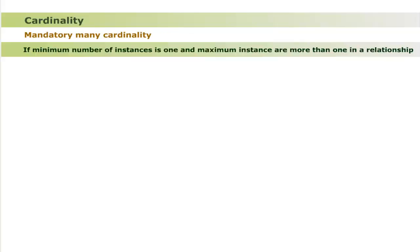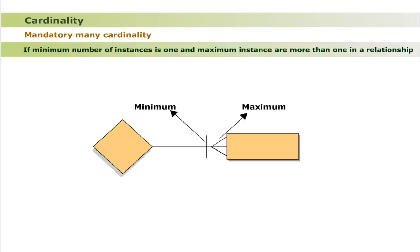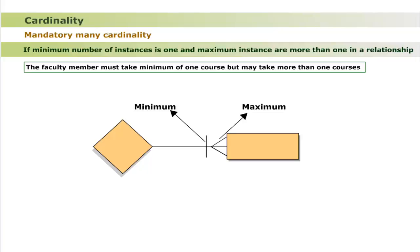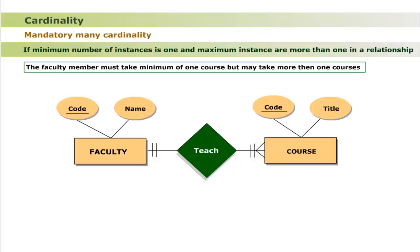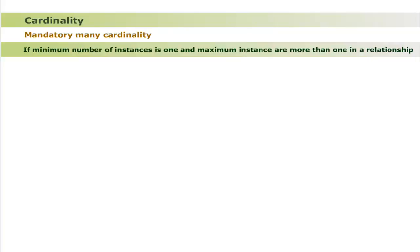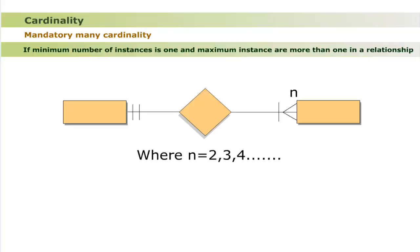Mandatory many cardinality means the minimum instance is one and maximum instances are more than one in a relationship. For example, a faculty member must take a minimum of one course but may take more than one course, while a given course is taken by only one faculty member. The cardinality of entity class Course is mandatory many, as the minimum course value is one and maximum course value is many in the relationship 'teach'. The 'many' in mandatory many may also be a defined number, represented as n, where n is any positive integer greater than one.